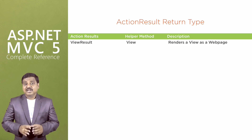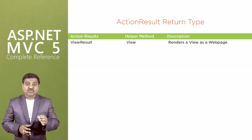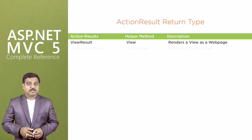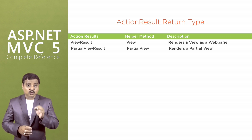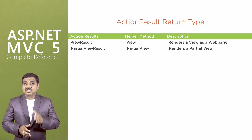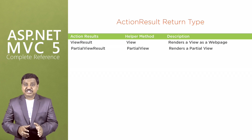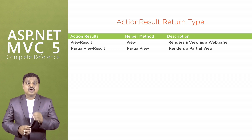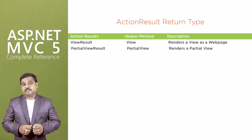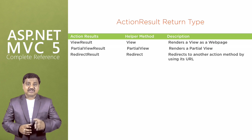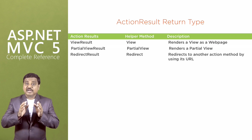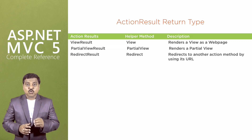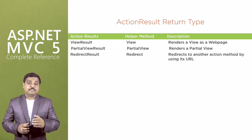View result is used to render a view as a web page using the view helper method. Partial view result is used to render a partial view, which defines a section of a view that can be rendered inside another view using the partial view helper method. Redirect result is used to redirect to another action method by using its URL with the support of the redirect helper method.